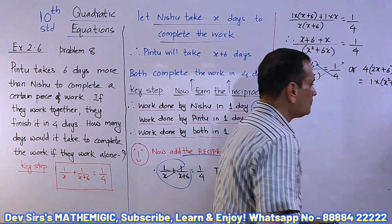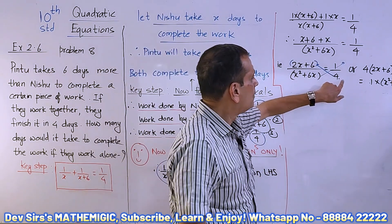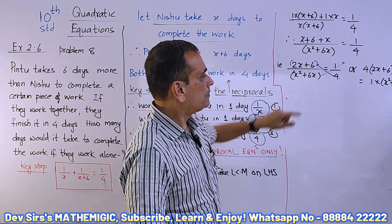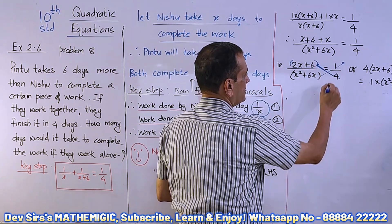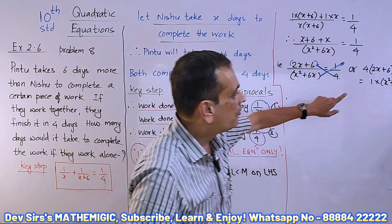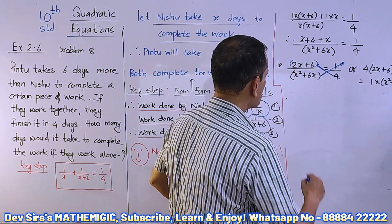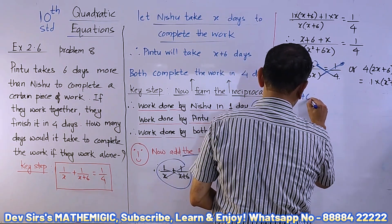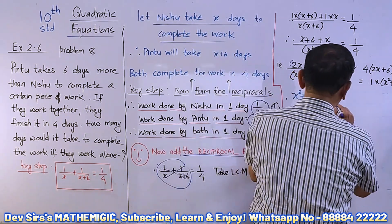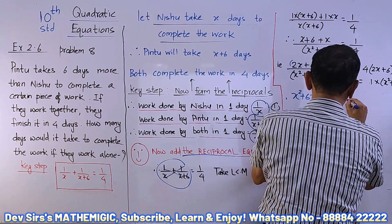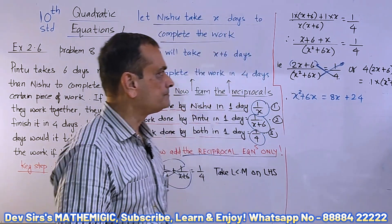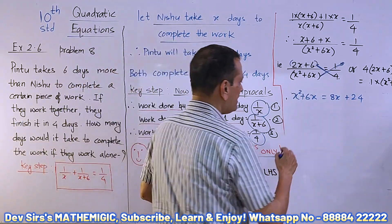Cross multiply: 4(2x+6) = 1·(x²+6x), which gives x²+6x on the right. Opening the bracket on the left: 4×2x = 8x, and 6×4 = 24. It is better to write the quadratic term on the left-hand side with a positive sign, so take all terms to the left-hand side.